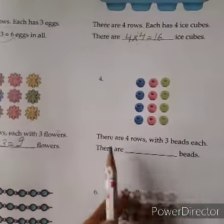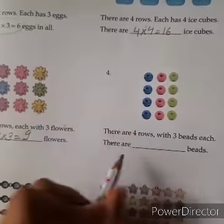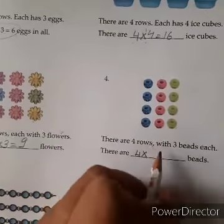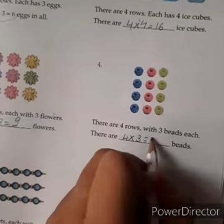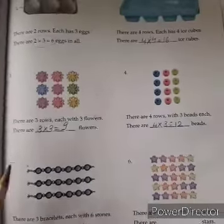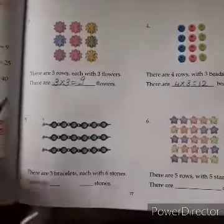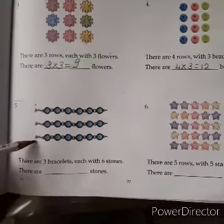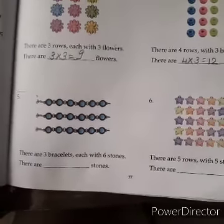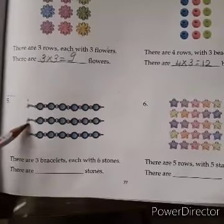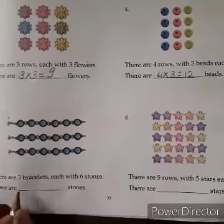Come here. There are how many rows? One, two, three, four. Four rows and each row has three beads. Four threes are twelve. Now how many bracelets are there? One, two, three. Three bracelets. Each bracelet has how many stones? One, two, three, four, five, six. So three bracelets and six stones. Number of rows first: three into six. Three sixes are eighteen.